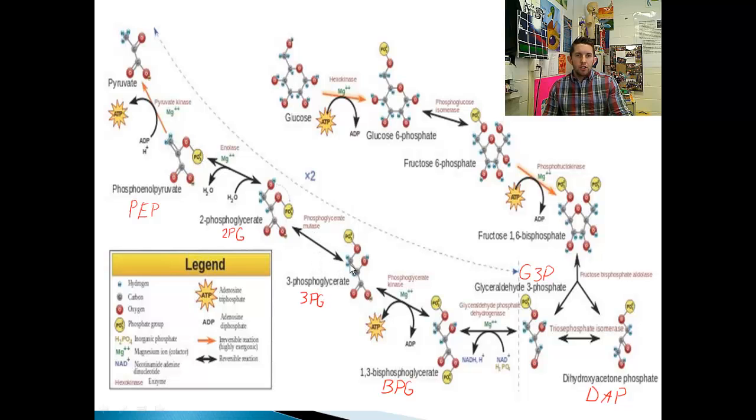3PG is going to get changed, it's going to get mutated to 2PG, 2-phosphoglycerate. Moving this phosphate from the third carbon to the second carbon. It goes from 3-phosphoglycerate to 2-phosphoglycerate, 2PG, with the help of an enzyme called the mutase. We have a mutase. So now we're at 2PG.